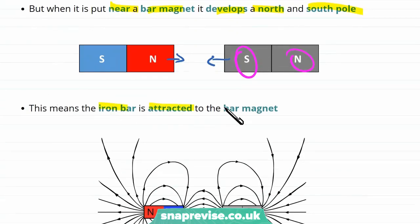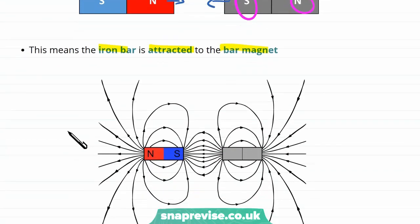So the iron bar is attracted to the bar magnet. And the total magnetic field created looks just like the magnetic field due to two bar magnets.